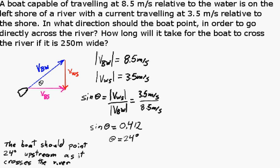Now, the second part of the problem: how long will it take for the boat to cross the river if the river is 250 meters wide? Well, we have to... time is the distance divided by velocity, but which velocity will we use? In this case, we'll use the velocity of the boat relative to the shore, because the distance of 250 meters is a distance relative to the shore.